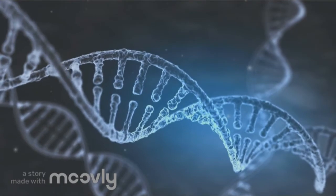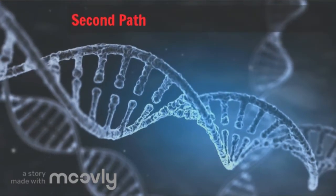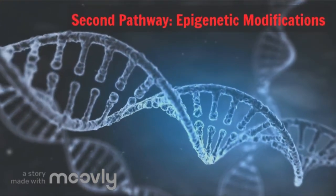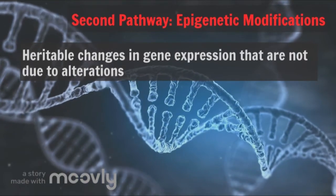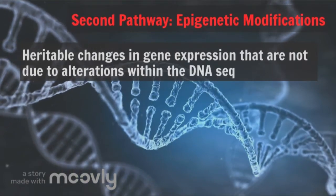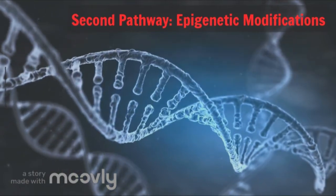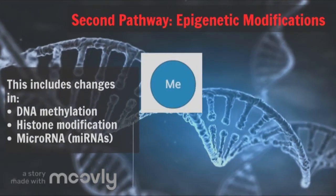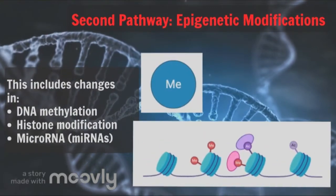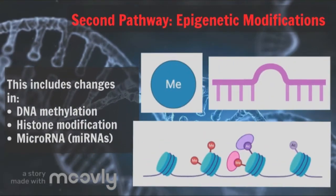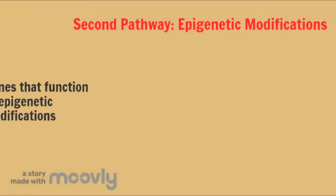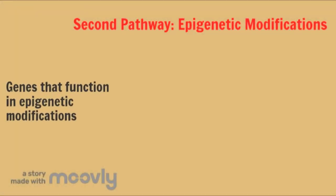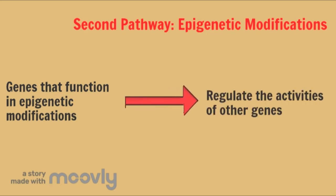The second pathway we will look at is epigenetic modifications. Epigenetics refers to heritable changes in gene expression that are not due to alterations within the DNA sequence itself. This includes changes in DNA methylation, histone modification, and microRNAs, also known as miRNAs. The human genome encodes a subset of genes that function in epigenetic modifications of the genome and thus regulate the activities of other genes.